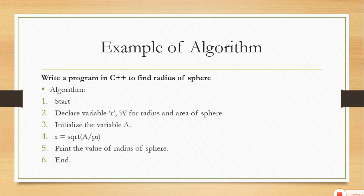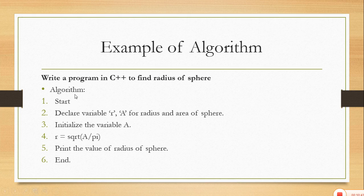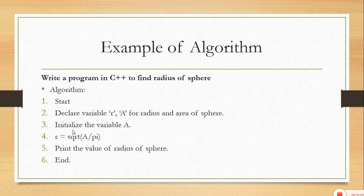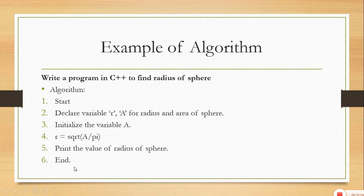Let's consider an example: if we want to write a program in C++ to find the radius of a sphere, first we write the algorithm. There are several steps: this is the pseudocode — first is the start, second we declare two variables (one for radius of the sphere and one for area of the sphere), third is initialization of the variable, fourth is the expression that gives the value of radius, fifth we print the radius of the sphere, and the sixth step is the end of the program.